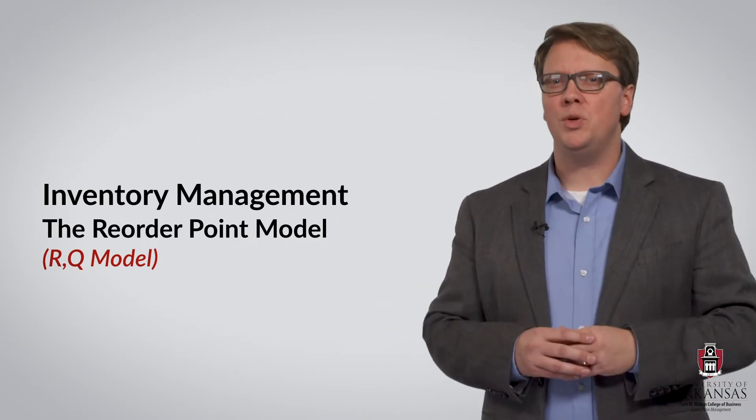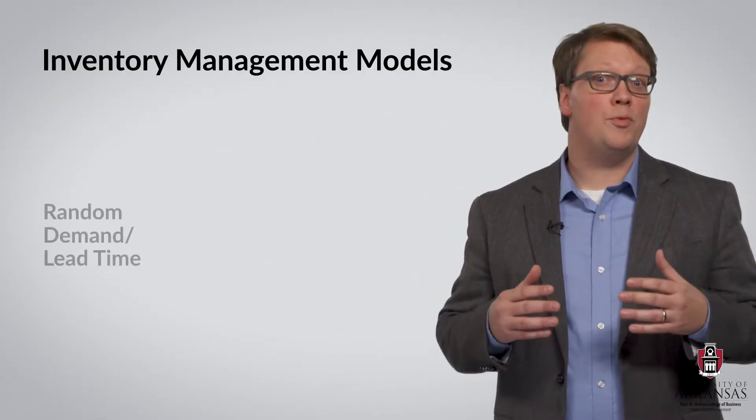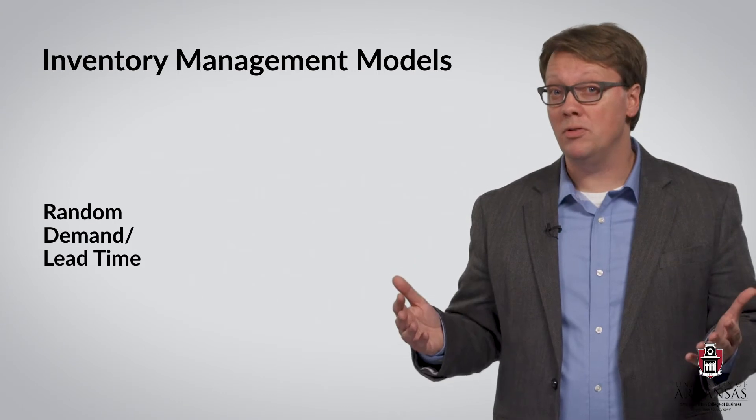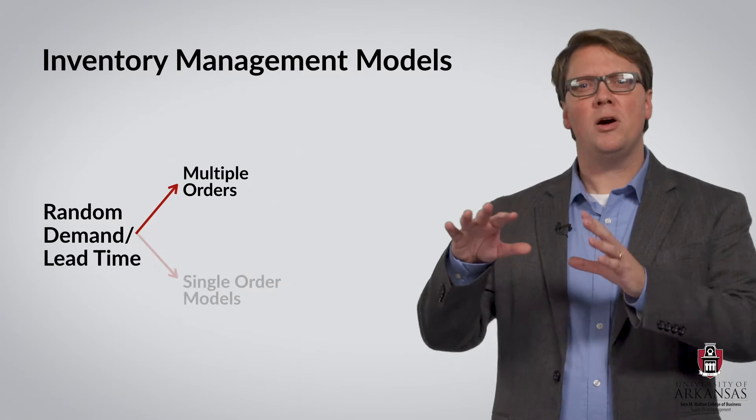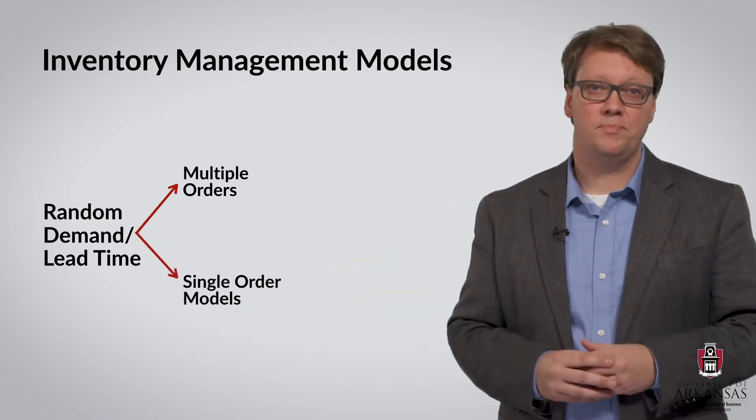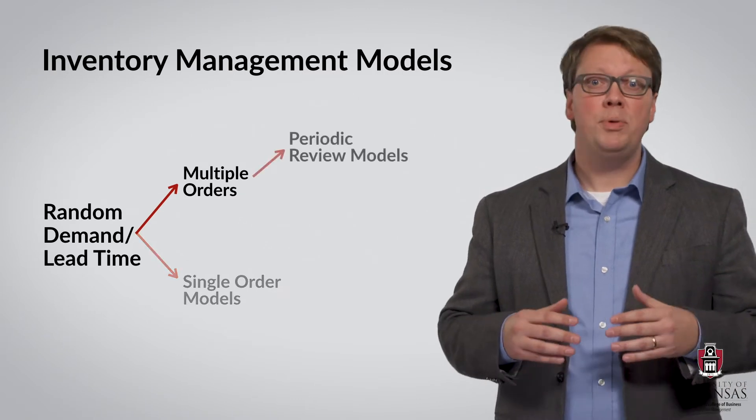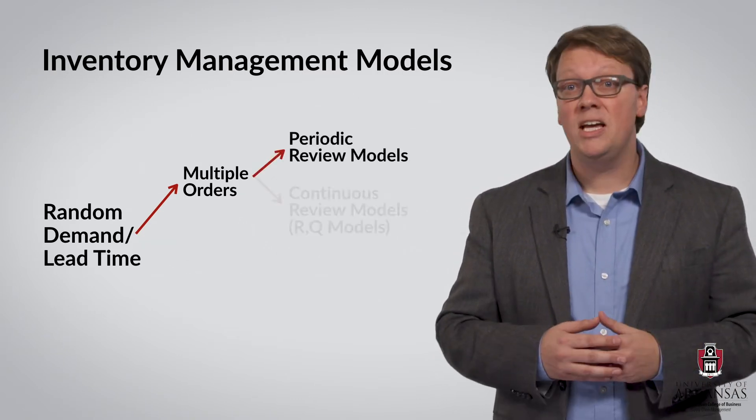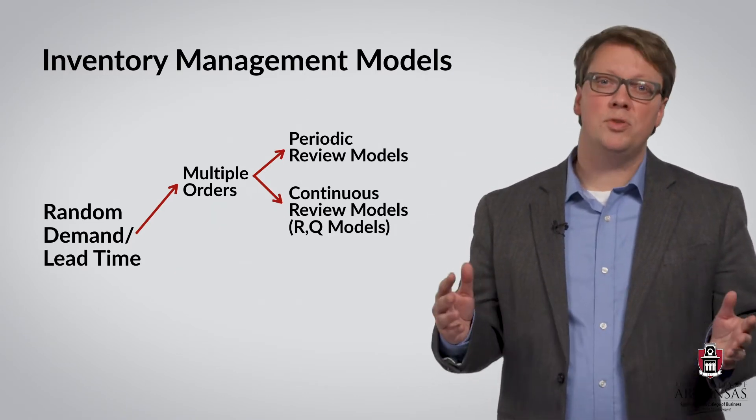Let me briefly show you how this fits into the big picture. In terms of random demand and lead time models, we are currently exploring multiple order models. We'll talk about single order models later. When it comes to multiple order models, there are periodic review models and continuous review models, and we previously explored the difference between the two.